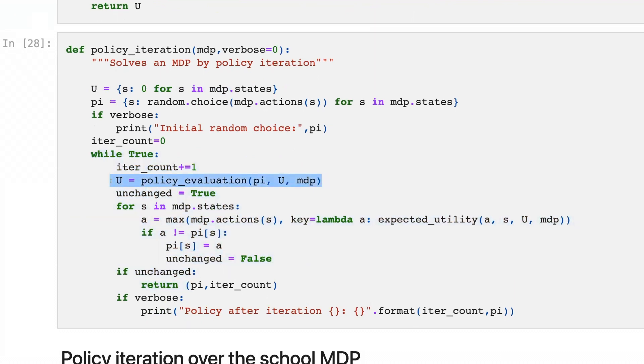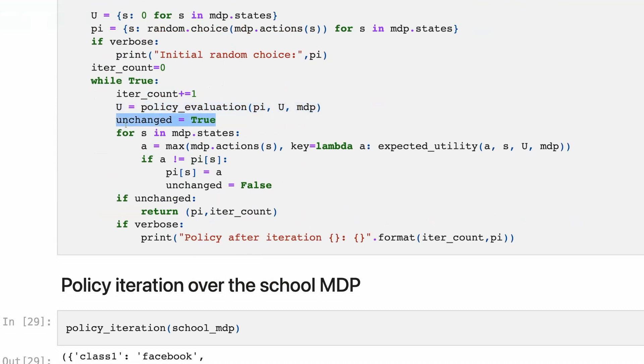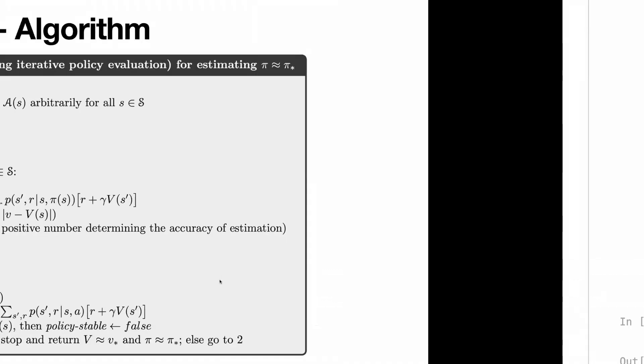This part we already discussed. First, and then here is the implementation of the algorithm. First, we assume that the policy isn't changed like here.